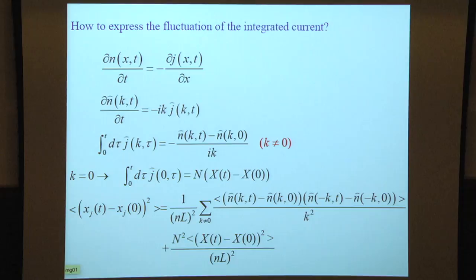What you get in the end is x_j(t) minus x_j(0) squared averaged is one over n times L squared sum over k of |n(k,t) minus n(k,0)|² divided by k² plus the term from k equals zero.